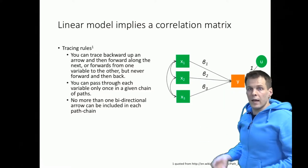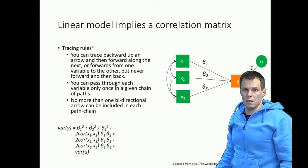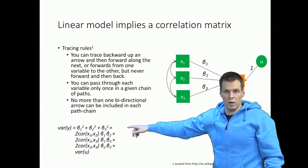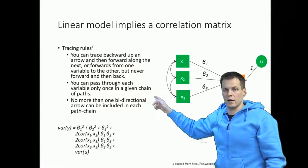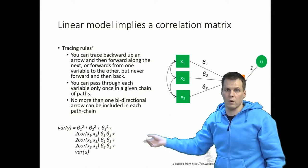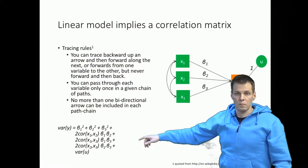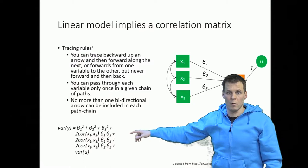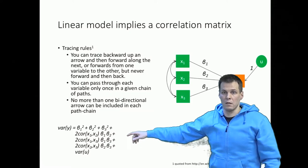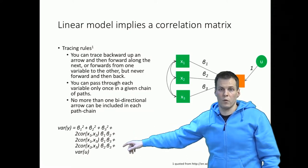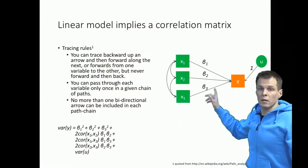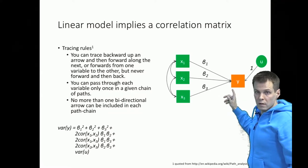Combining these gives us: the direct effects beta one squared plus beta two squared plus beta three squared, because we go back and forth so we multiply betas together. Then the correlational paths between pairs — going x1 to x2 and back, and x2 to x1 and back — multiply by two. We do that for each pair of variables, and then add the variance of the error term. That gives us the variance of y, which in a correlation matrix is always one.